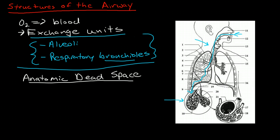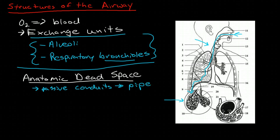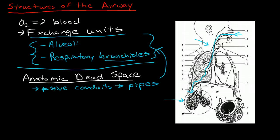So the air, they are passive conduits of air. They are just the pipes in a plumbing system to get air to these active exchange units. So let's talk about what those structures of the passive conduits are.